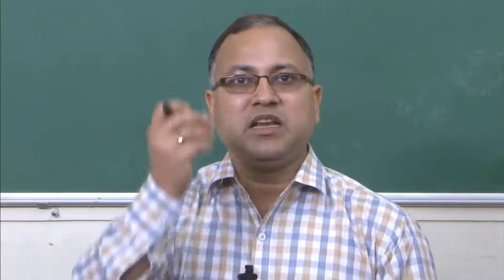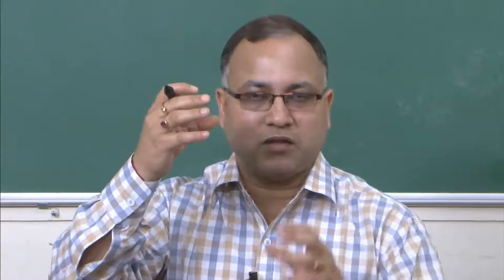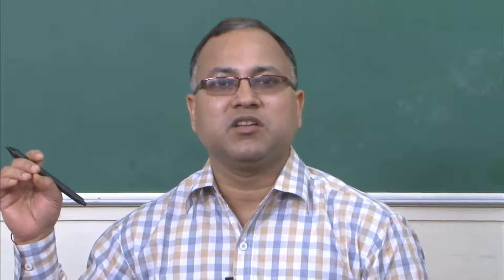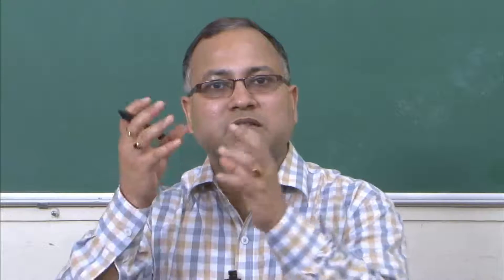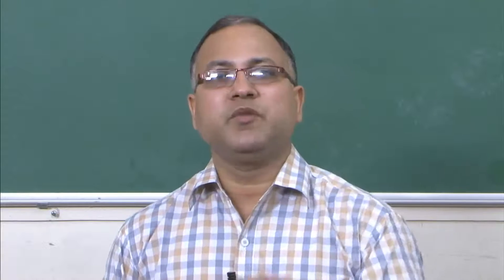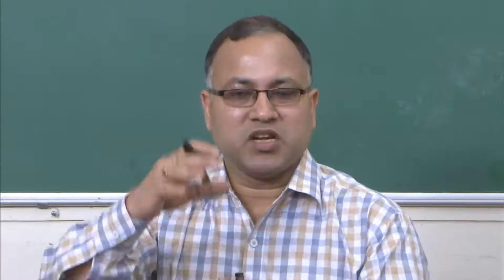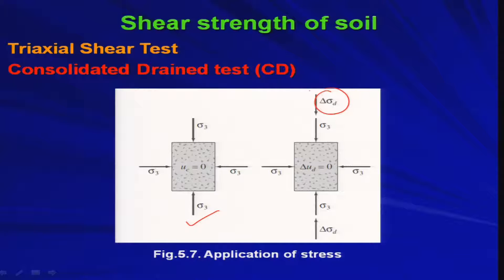Once you open the drainage valve, whatever water is present under excess pore water pressure inside the soil specimen will drain out through the drainage path. Once the excess pore water pressure dissipates — u_c becomes zero after complete consolidation under sigma_3 — you then apply the deviator stress delta_sigma_d through the axial loading ram.